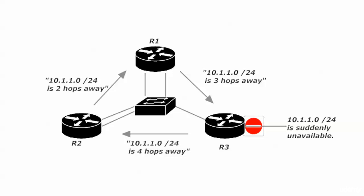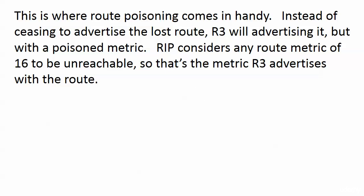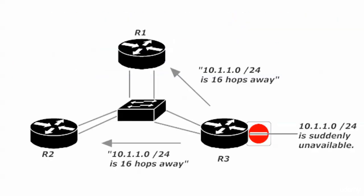We'd have a real problem without route poisoning, but fortunately it's on by default. With route poisoning, router 3 continues to advertise the lost route, but does so with a poisoned metric. RIP only understands hop count, and a hop count of 16 indicates an unreachable route. So that is the metric router 3 advertises with the route — that's where the name comes from.